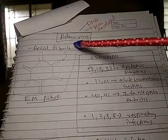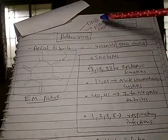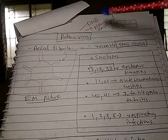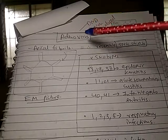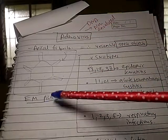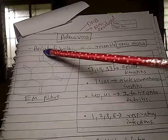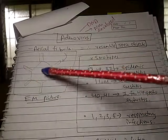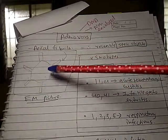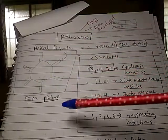Adenovirus is a DNA virus which is non-enveloped. The electron microscopic picture of this adenovirus has apical fibrils, and this resembles a space object.